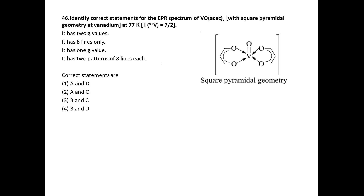The question says: identify the correct statement for the EPR spectrum of vanadium bisacetylacetonate — that is, acetoacetone squared — with square pyramidal geometry at vanadium, at 77 Kelvin. Given that the nuclear spin of vanadium is 7/2.